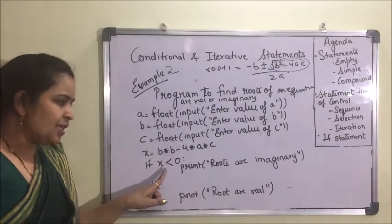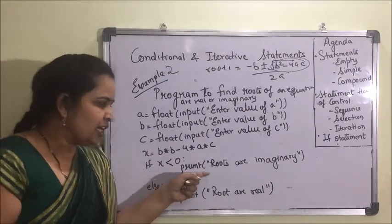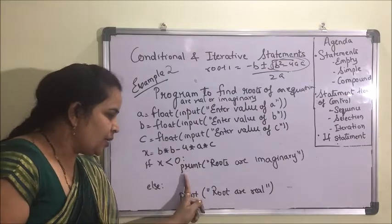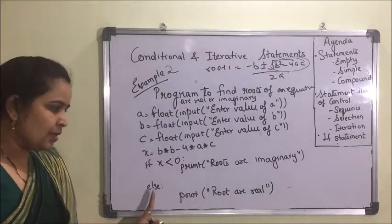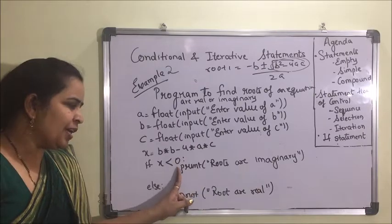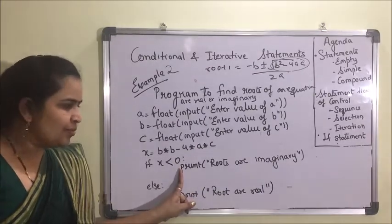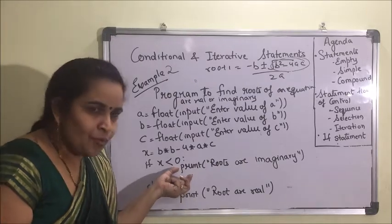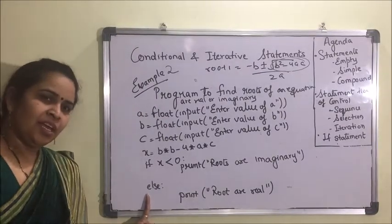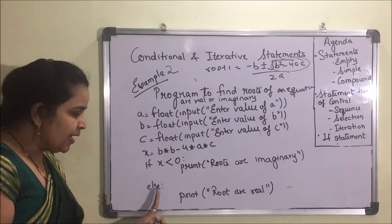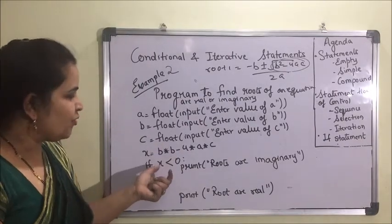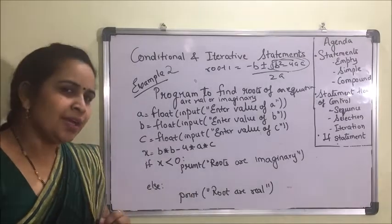If x is less than 0, we print 'Roots are imaginary'. Otherwise, the else block runs and prints 'Roots are real'. You can see the colon after else — once you press enter, the cursor moves to the indented position for the else block. If you want to go back out, press backspace and the cursor returns to the base level. This is how we implement if and else.